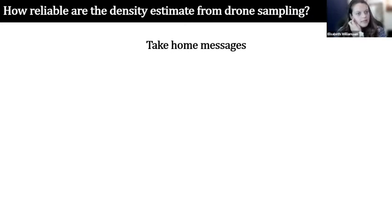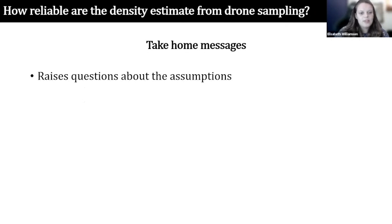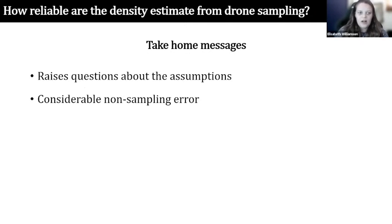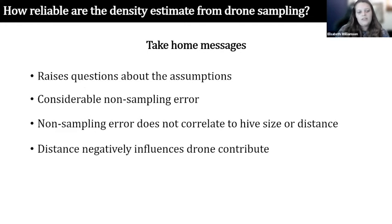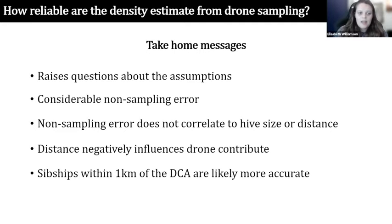Take-home messages from this project: we've raised questions about the assumptions we set out to validate. There was a considerable non-sampling error of about a third, which would cause a large underestimate, and it was not correlated with hive size or distance. Distance negatively influenced drone contribution, and sib ships within one kilometre of the sampled DCA are more likely to be accurate than those further away.